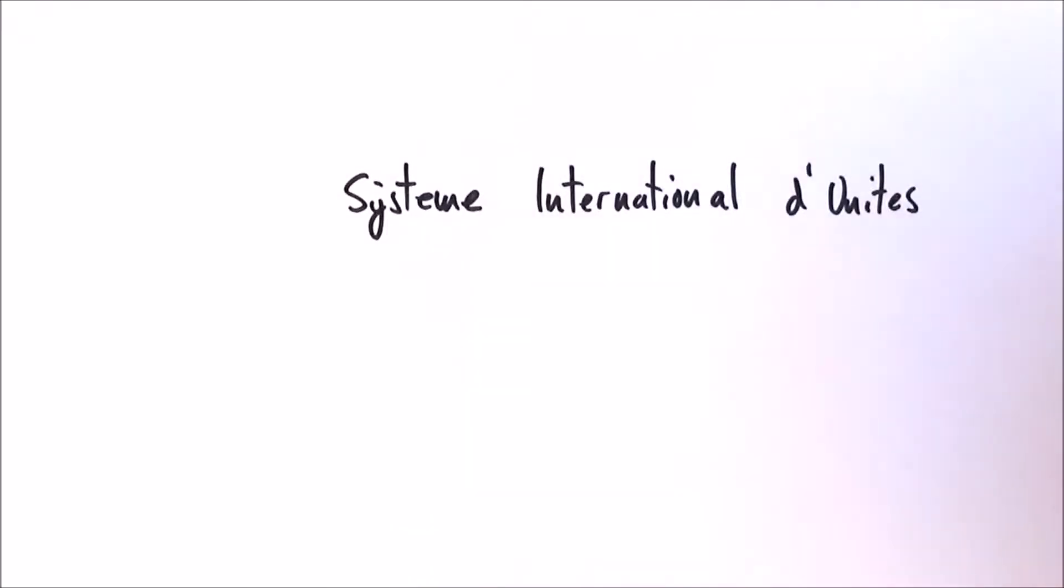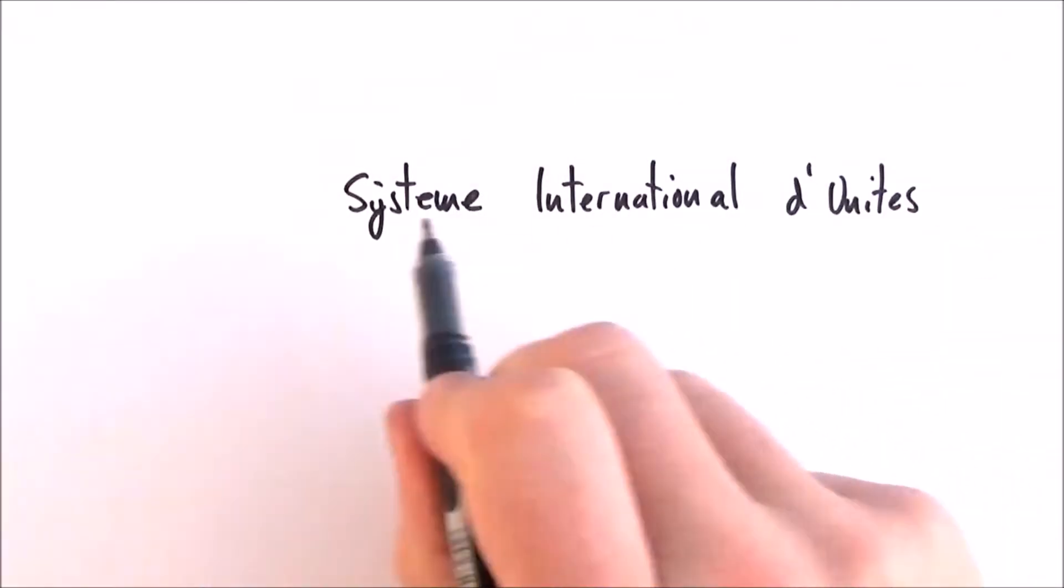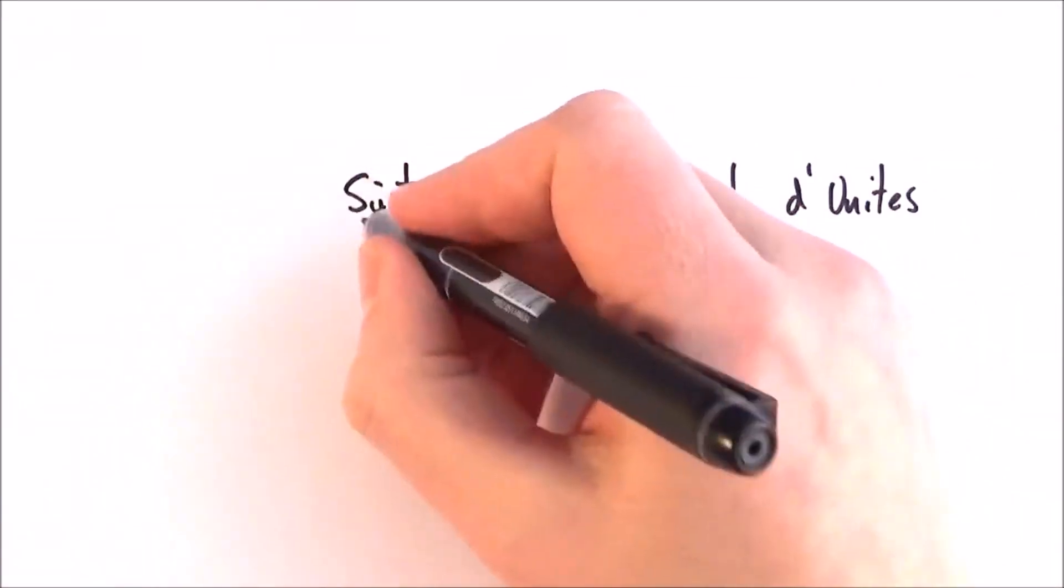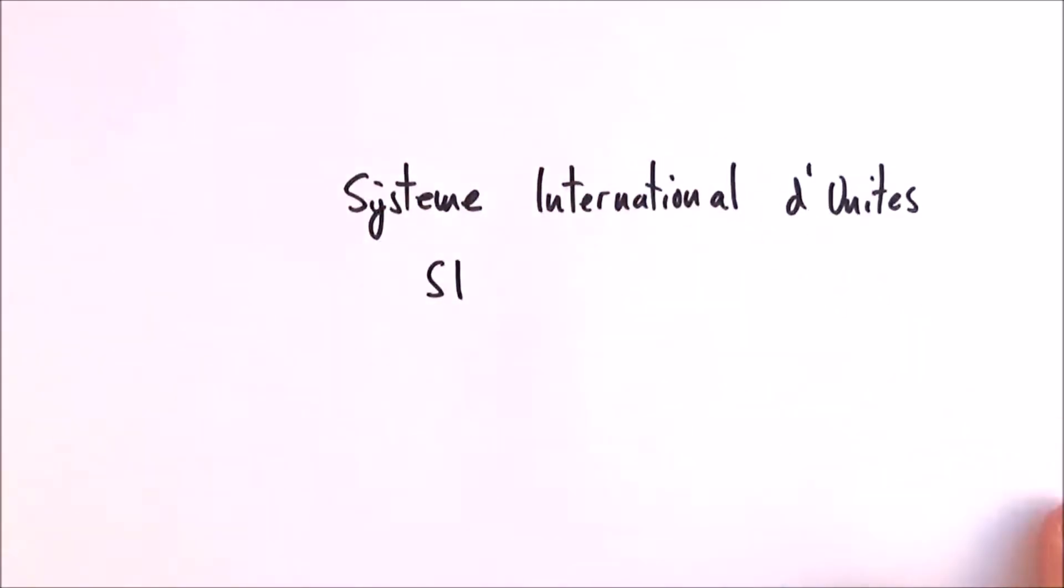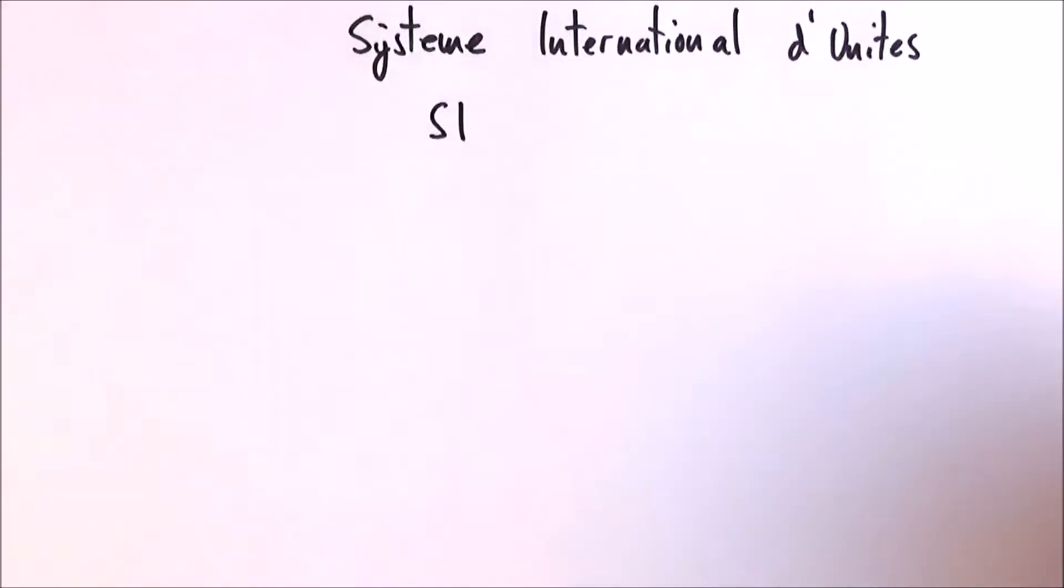The system international units, basically the international system of units, that's why they're known as SI units. There are seven base units from which everything else can be made.